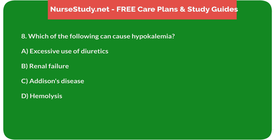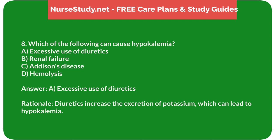Question 8: Which of the following can cause hypokalemia? A. Excessive use of diuretics. B. Renal failure. C. Addison's disease. D. Hemolysis. Answer: A. Excessive use of diuretics. Rationale: Diuretics increase the excretion of potassium, which can lead to hypokalemia.